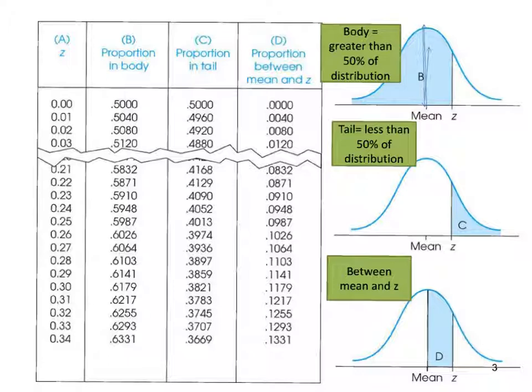The body, labeled B, is greater than 50% of the distribution — it crosses the mean. Keep in mind that the distribution is everything under that curve. So for example, if we had a z of 0.22, we'd look in the B column and the proportion in the body would be 0.5871. We can easily find those proportions for the body.